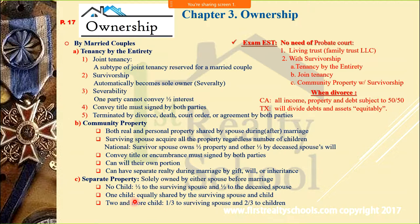If you have one child, the property is equally shared by the surviving spouse and the child. If you have two or more children, the children together receive two-thirds of the property and the surviving spouse receives one-third.